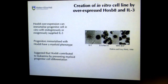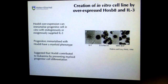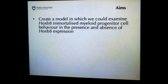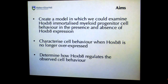It is possible to create an in vitro cell line by overexpressing HoxB8 and IL-3, with IL-3 supplied either endogenously or exogenously. These HoxB8-immortalised progenitor cells have a myeloid phenotype and look very similar to Wehi-3B cells. It was suggested that HoxB8 could be contributing to leukaemia by preventing myeloid progenitor cell differentiation. My PhD project aimed to determine whether this was the case, or whether HoxB8 also had other effects in myeloid cell immortalisation — specifically to create a model, characterise cell behaviour upon HoxB8 withdrawal, and determine how HoxB8 regulated this behaviour.